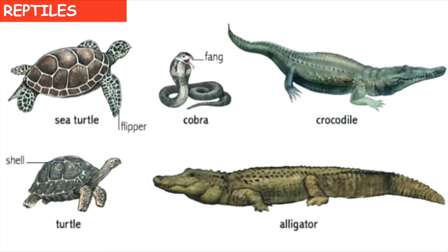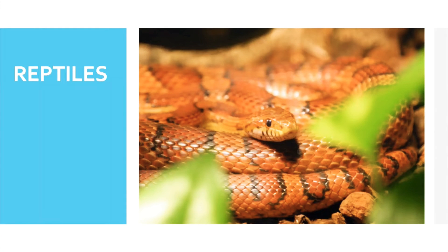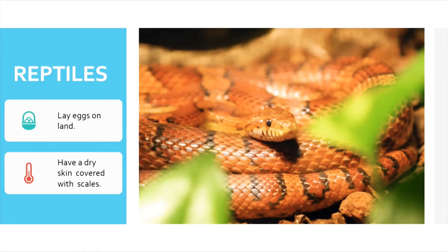The next type is reptiles. Turtles, snakes, crocodiles, and alligators are all examples of reptiles. Reptiles lay eggs on land and have a dry skin covered with scales. This is the major difference between an amphibian and a reptile: amphibians lay eggs in water, whereas reptiles lay eggs on land.